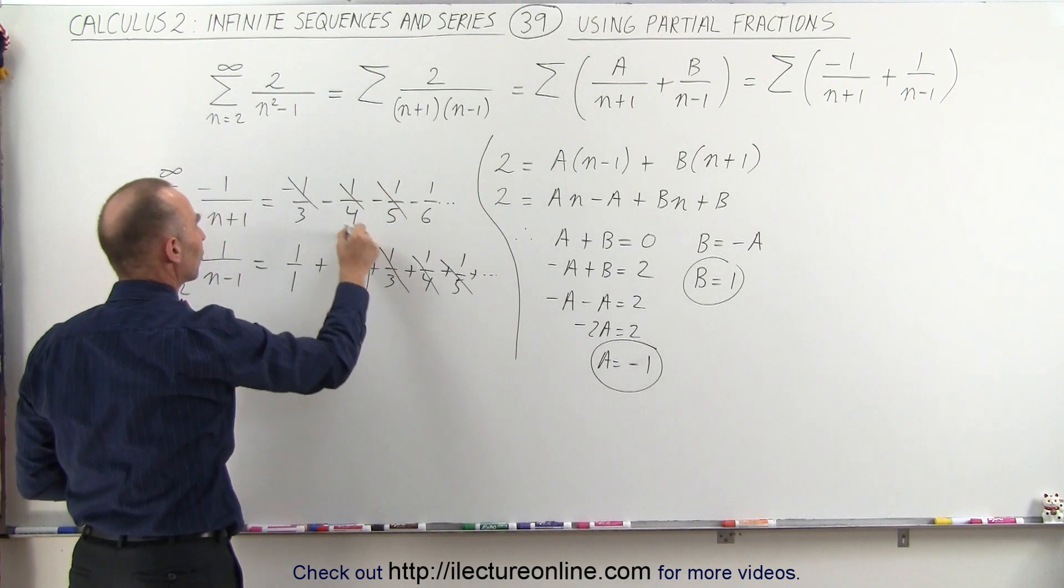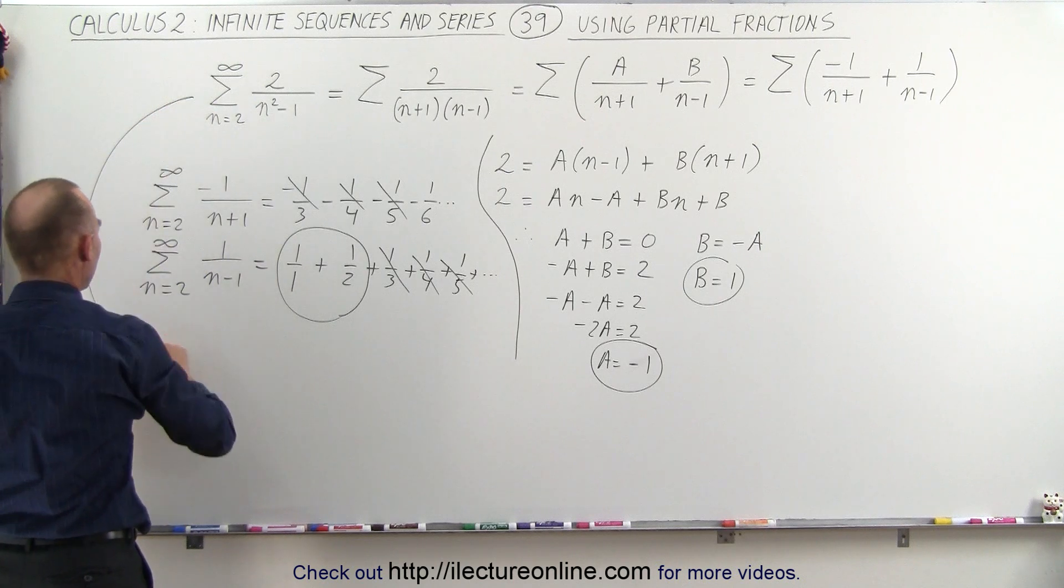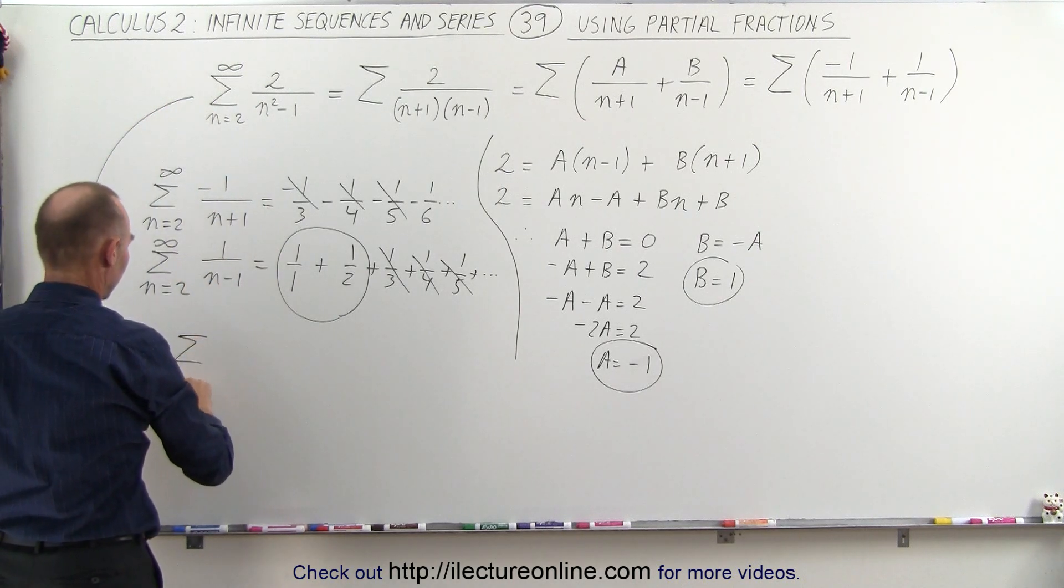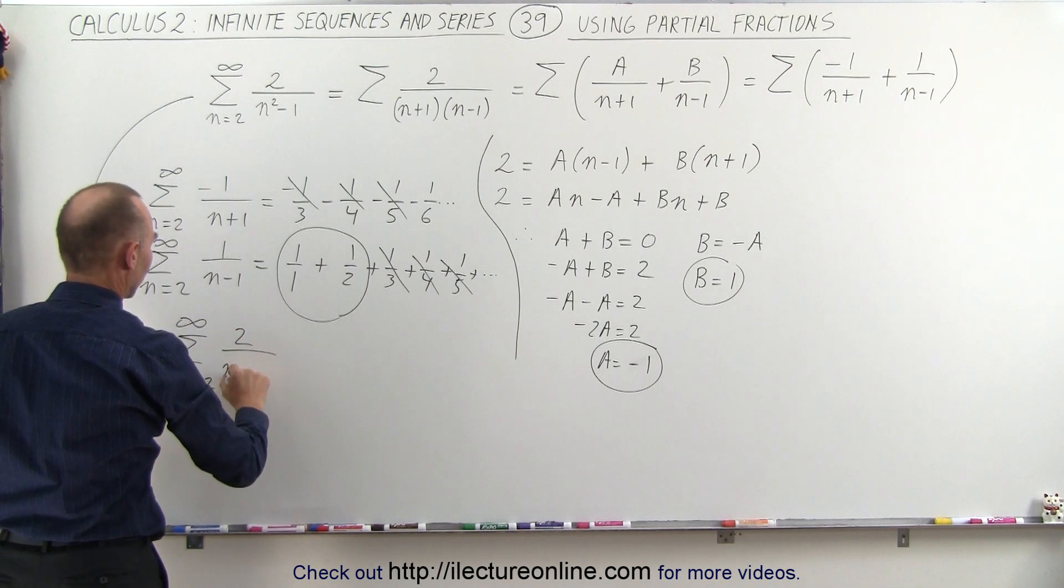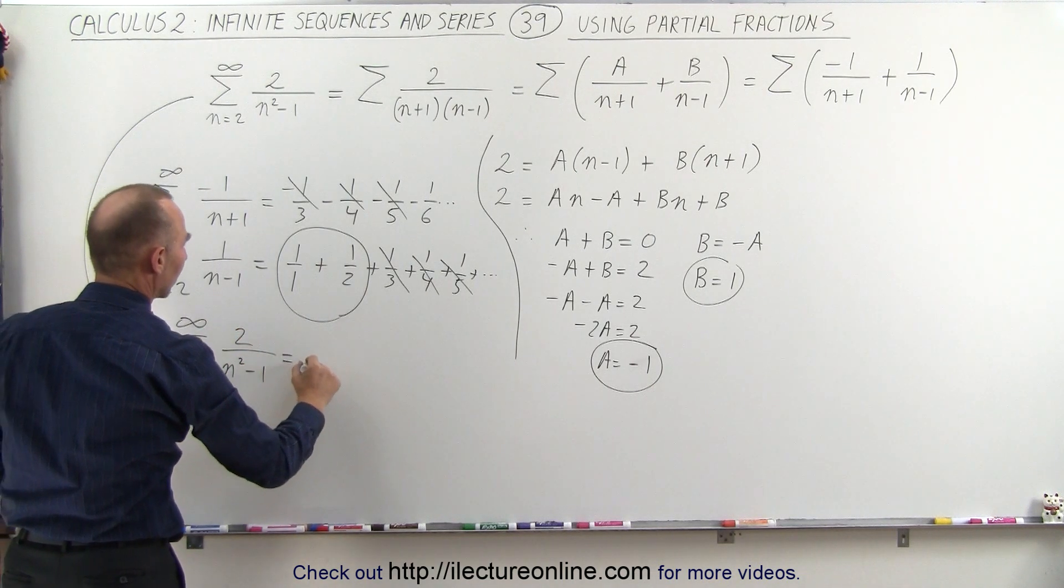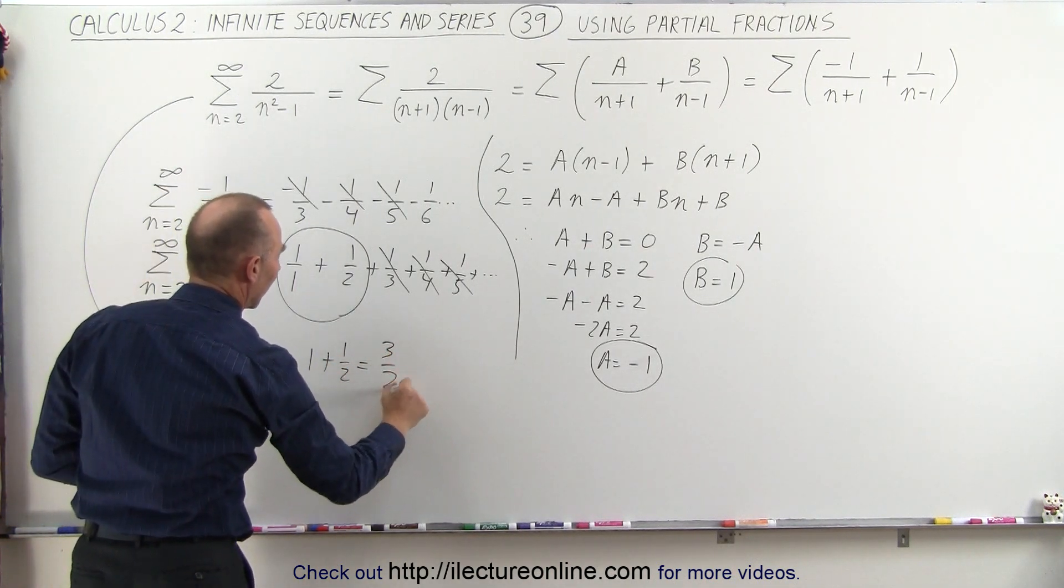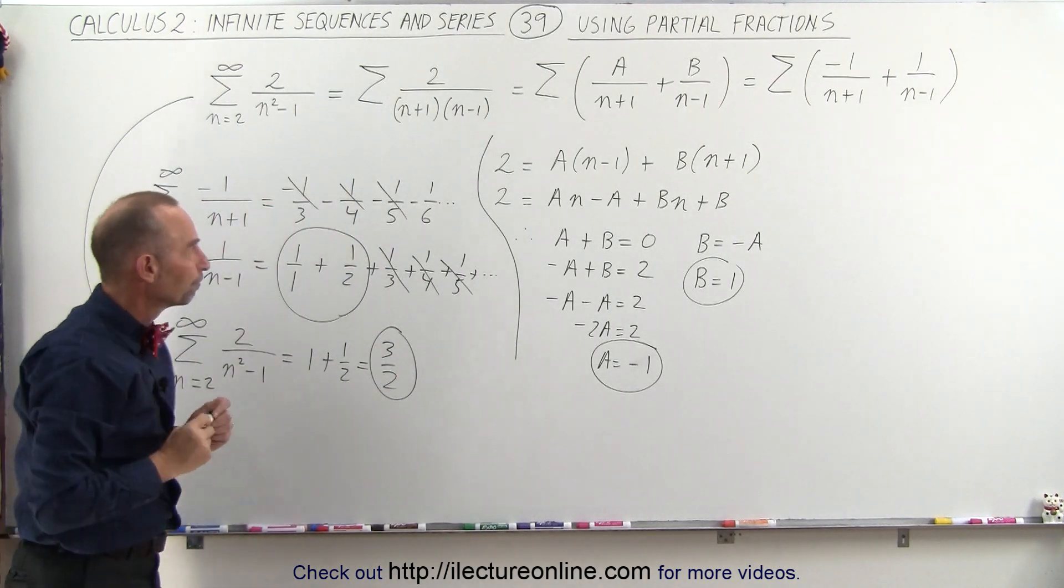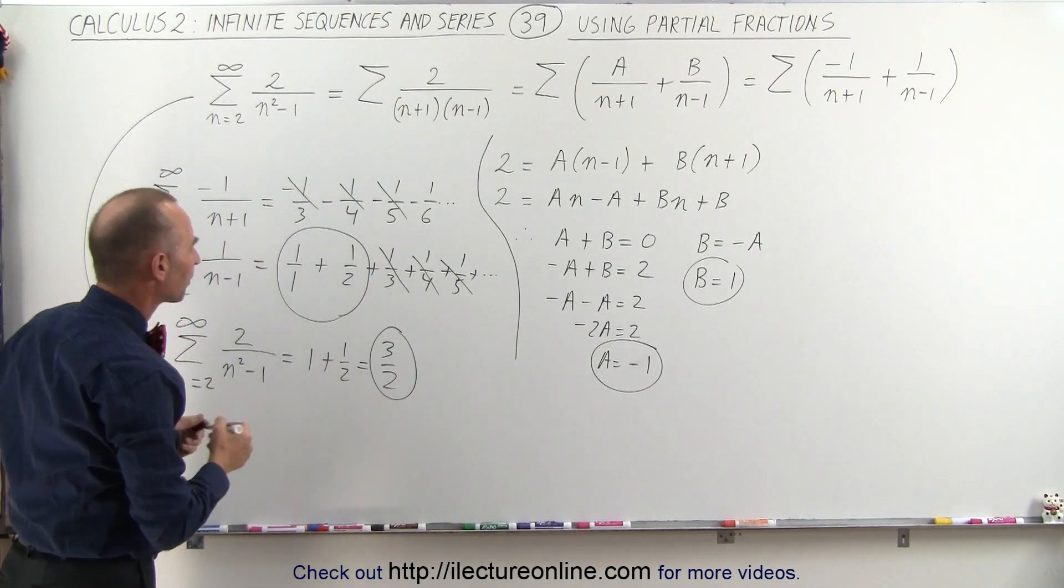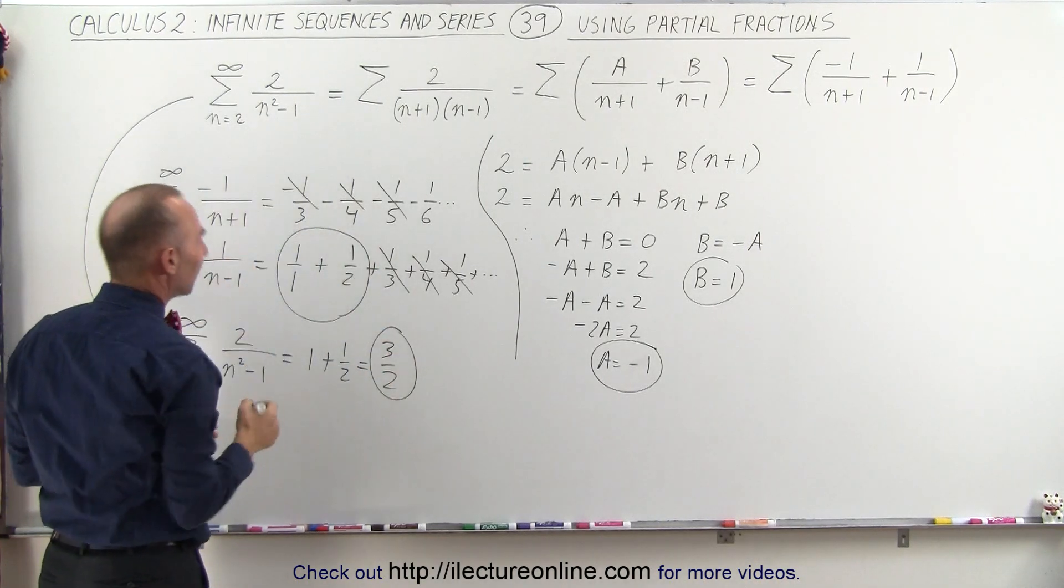Which means the only two surviving terms that do not get cancelled out are those two, which means that this sum, which is the sum of these two series. So, the sum of n equals 2 to infinity of 2 over n squared minus 1 can be written as 1 plus 1 half, which is 3 halves. And that is the result of this infinite sum.